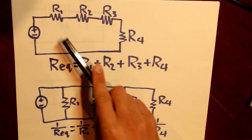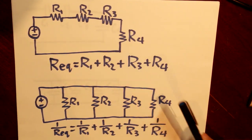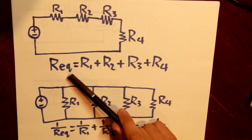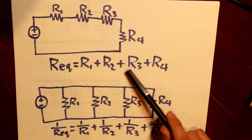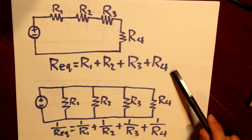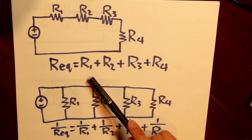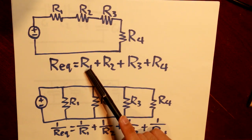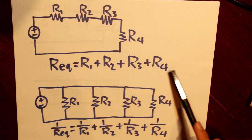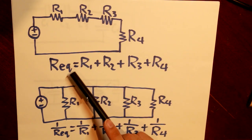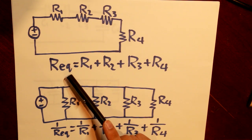When we have resistors in series, to recap, our equivalent resistance will be given by a formula where you add all the resistors together to get your equivalent resistance.